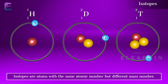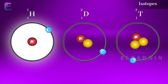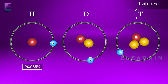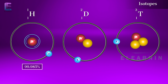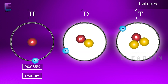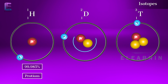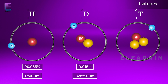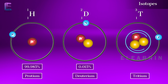Isotopes are atoms with the same atomic number but different mass numbers. For example, 99.985% of hydrogen atoms have only one proton — this isotope is called protium. Hydrogen also has two other isotopes: deuterium, which has one proton and one neutron, and tritium, which has one proton and two neutrons.